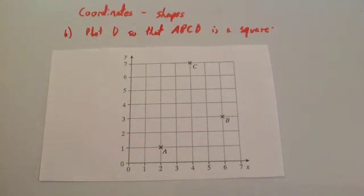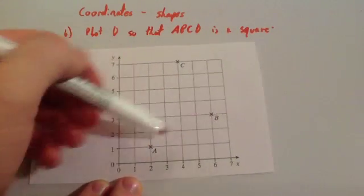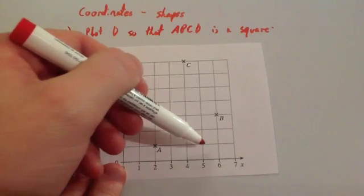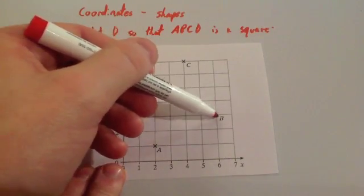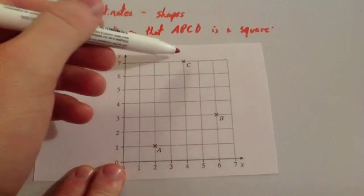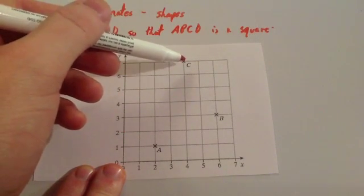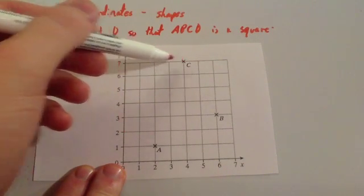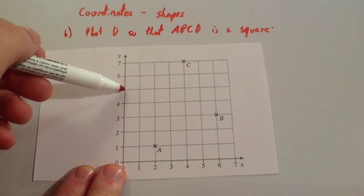So there's different ways to do this. One way we've done it is to go from each point. So to get from A to B, you go one, two, three, four across, and two up. To go from B to C, you go four up, two across. And then to get from C to D, you'd then go four across and two down. So it'd be up here somewhere.